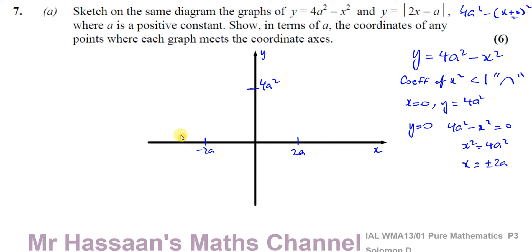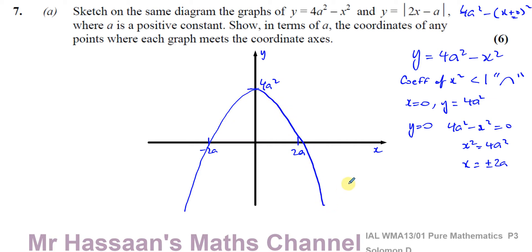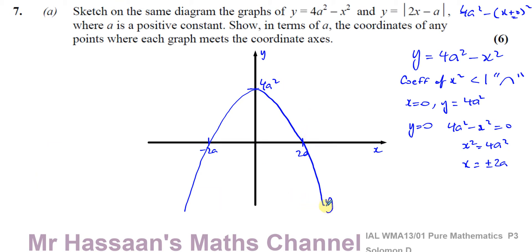I prefer to draw the graph first and then put the points in. So drawing through those intercepts: minus 2a and plus 2a on the x-axis, and 4a squared on the y-axis. There we have a sketch of y equals 4a squared minus x squared — a parabola, upside down, a frowny face. That one's sorted out.